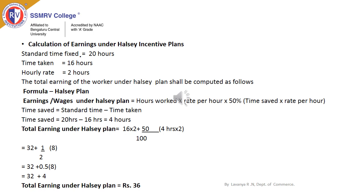The time saved equals standard time minus time taken. The standard time allowed is 20 hours and time taken by the worker is 16 hours, so you are saving 4 hours. For time saved, 50% of bonus will be paid under the Halsey Plan. Standard time is 20 hours, time taken is 16 hours, and rate per hour is ₹2. Substitute the information in the formula and simplify it. Earnings under the Halsey Plan is ₹36.